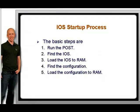After an IOS is loaded, except for ROMMON, the router looks for the startup config file in NVRAM. If it is found, it is copied to RAM and renamed running config. If there is no startup config file in NVRAM, the router will broadcast for a TFTP server to see if a configuration file is available for it.